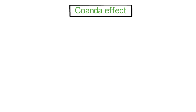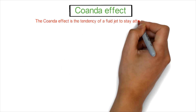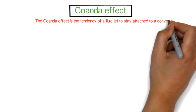Do you struggle when you poured your drink from the bottle to the glass and the drink decided to take the path of the edge of the bottle and drop out of the glass? Don't worry, it is the Coanda effect. The definition of the Coanda effect is a tendency of the fluid jet to stay attached to a convex surface.